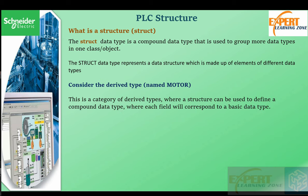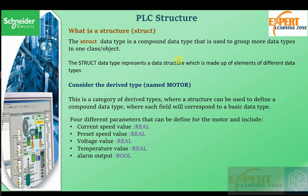For example, consider an industrial plant running several motors. Those motors have different parameters: temperature, speed, direction, and voltage. If we define each variable distinctly for each motor, we end up with a lot of variables, making modification and maintenance very difficult. Instead, we create a data block to manage all the parameters a motor can have.